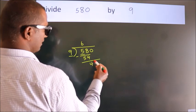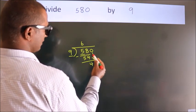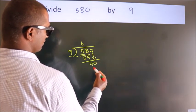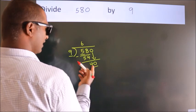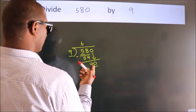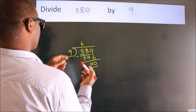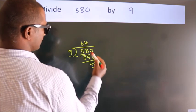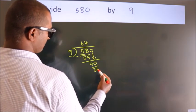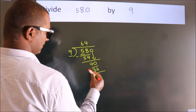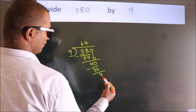After this, bring down the beside number. So 0 down, so 40. A number close to 40 in the 9 table is 9 times 4 equals 36. Now we subtract, we get 4.